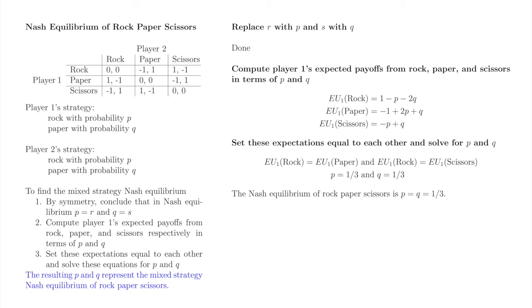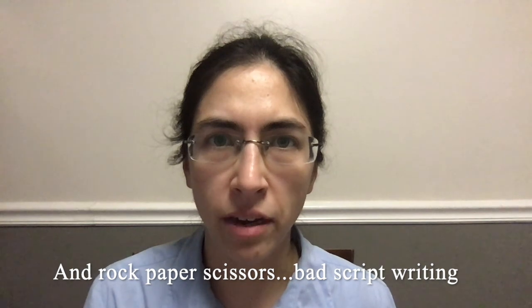The Nash equilibrium of rock-paper-scissors is that player 1 plays each of her pure strategies equally often, and player 2 plays each of her pure strategies equally often. Neither player can predict what the other will do. Thanks so much for watching this video, in which we found mixed strategy Nash equilibrium in matching pennies. In the next video, we'll find best response functions in matching pennies, and we'll see that the Nash equilibrium we found in this video is indeed the intersection of those best response functions.